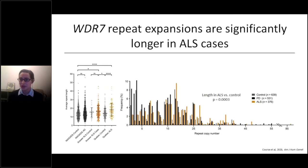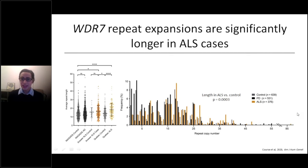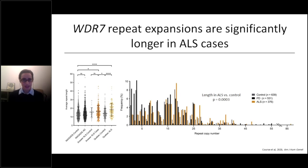While on this graph, I'll point out that the longest repeat expansion we've seen so far is 86 copies, belonging to an individual who developed ALS at age 72. In addition to repeat expansion size, we were interested in looking at internal nucleotide structure, because there is increasing evidence that internal nucleotide sequence can also play a role in disease susceptibility.